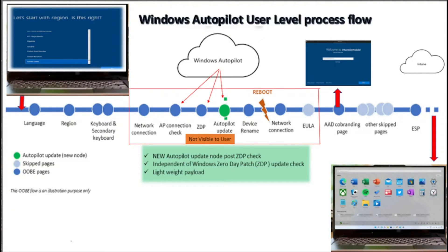In the previous section we talked about what screens the user will see while performing the autopilot. Now let's talk about what they are not able to see — the backend processes involved in autopilot. When the user is in the out-of-box experience window, they have to configure the language, the region, and the keyboard layout. Optionally they can configure a secondary keyboard layout. If the user is already using an Ethernet cable for internet access, they will not be prompted to provide Wi-Fi credentials.